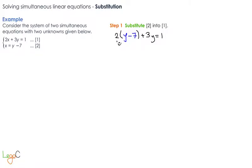For this example, what we have to do is expand the brackets using the distributive law. So we have 2y take away 14 plus 3y equals 1.